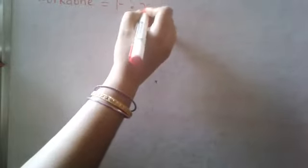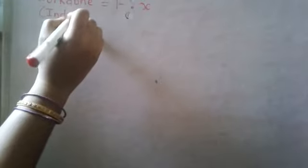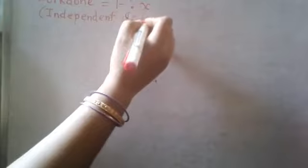So conservative force - how do we define it? Here is the first criteria or condition. You are doing some work. That work should be independent of path. Independent of path means it depends on initial and final point only. It does not depend on whichever path you have taken. So it depends on initial and final point.